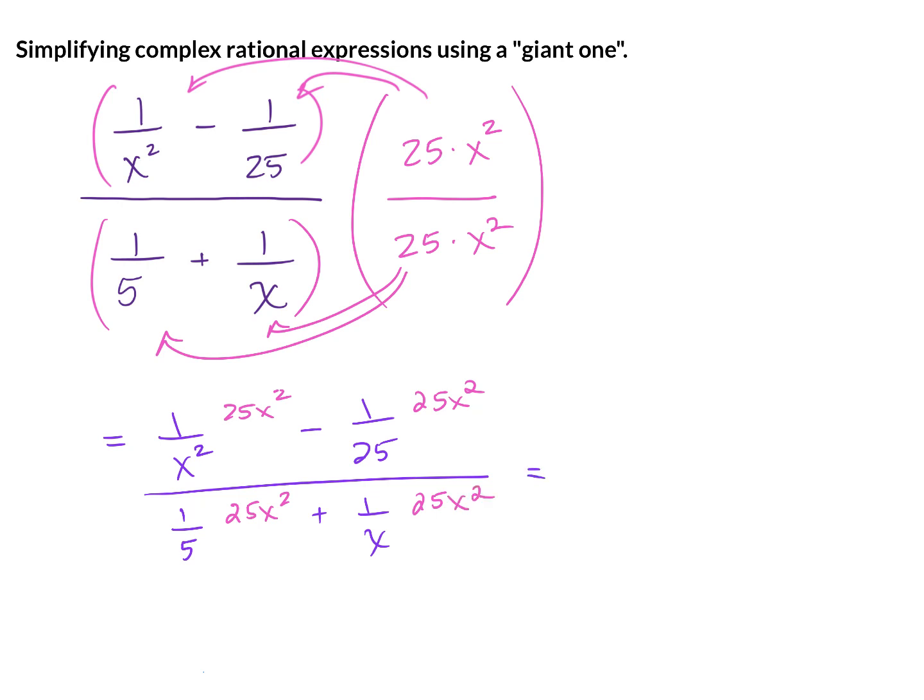Simplifying, we're going to simplify first. So the x squares cancel here, the 25 cancels here, the 5 and the 25 simplify to a 5, and the x and the x squared simplify to x. We are then going to write out our final answer, but make sure you notice that all of my denominators are all gone.